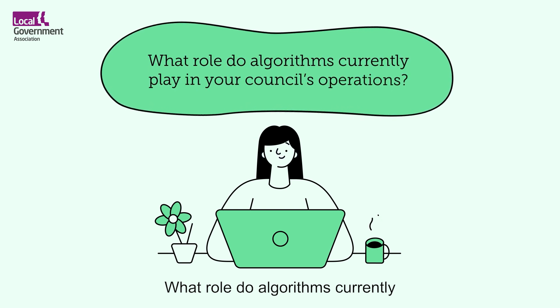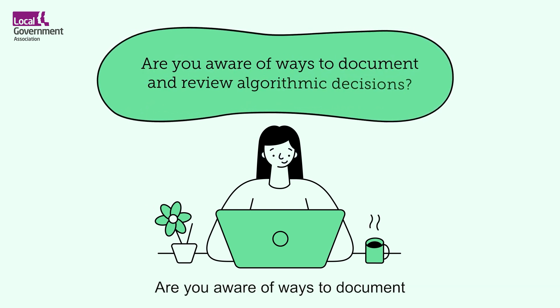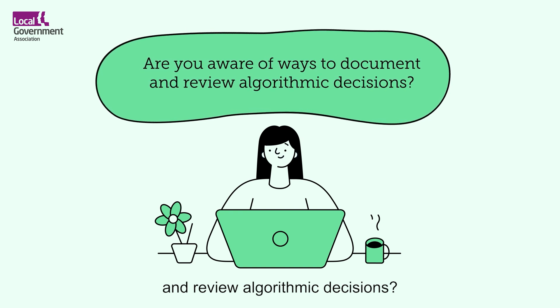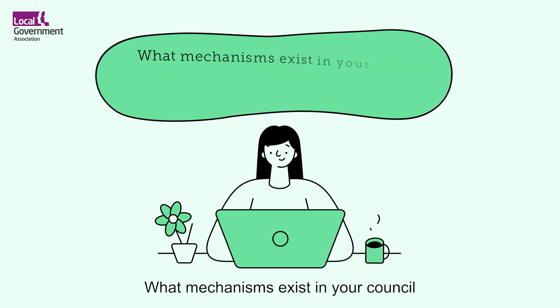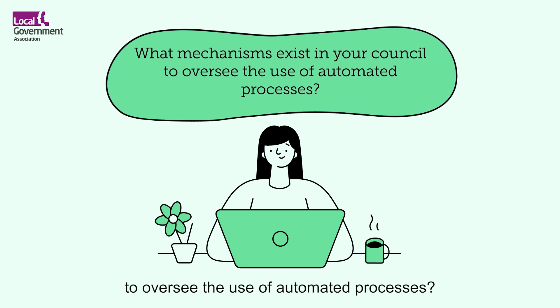What role do algorithms currently play in your council's operations? Are you aware of ways to document and review algorithmic decisions? What mechanisms exist in your council to oversee the use of automated processes?